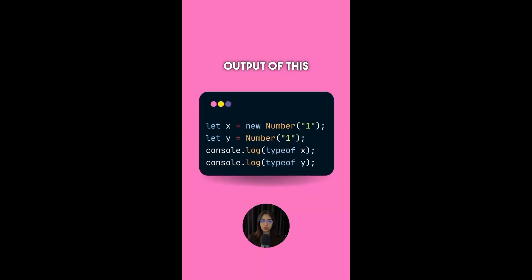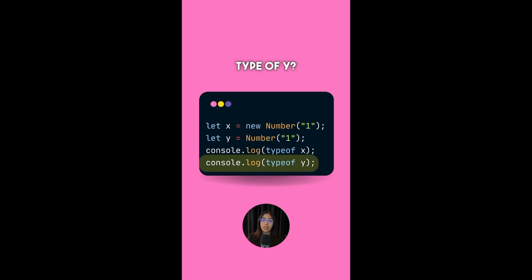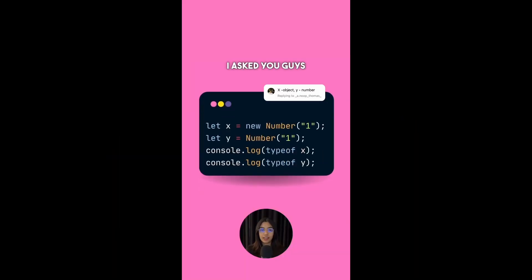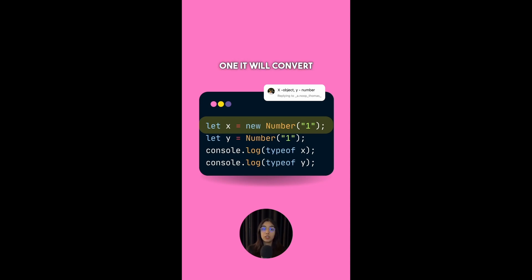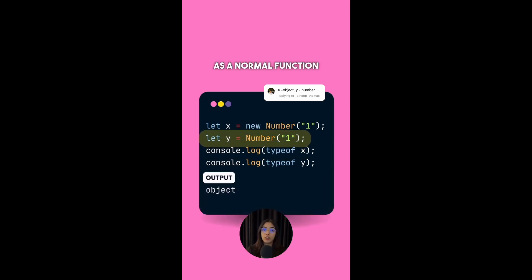Can you tell me what will be the output of this code? I have var x = new Number('1') and let y = Number('1'). What will be the type of x and the type of y? When you use the new keyword with Number(), it converts the string to the number 1 and returns a wrapper object — so typeof x is 'object'. When you call Number() as a normal function, it simply converts the argument to the primitive number 1 — so typeof y is 'number'.